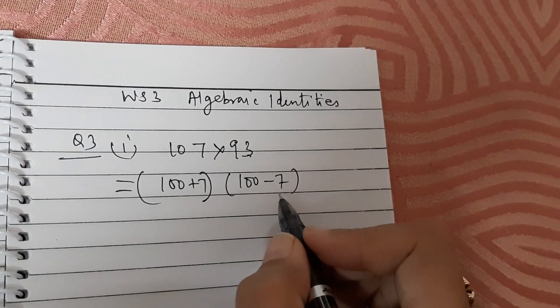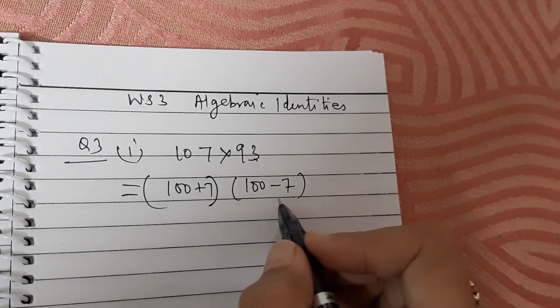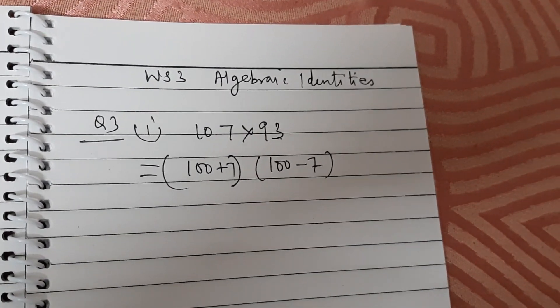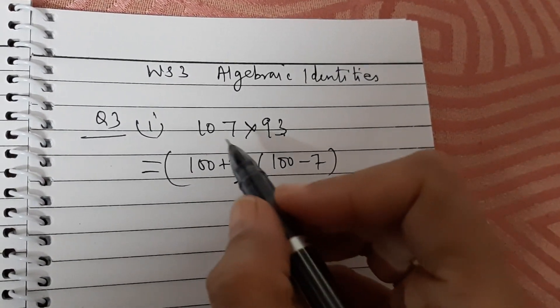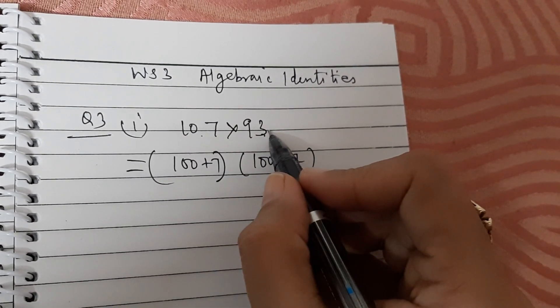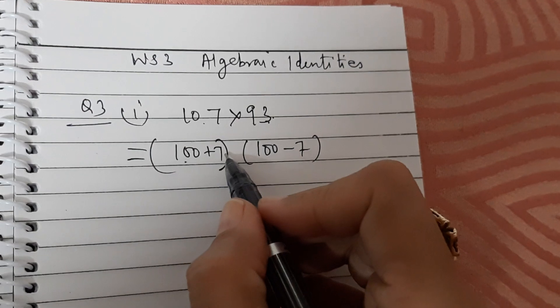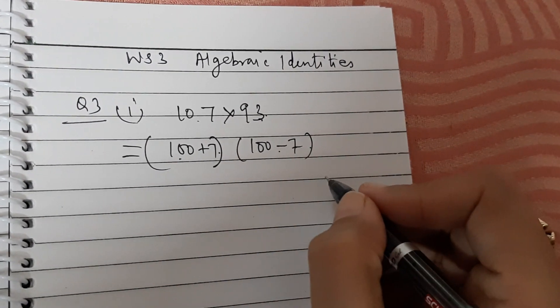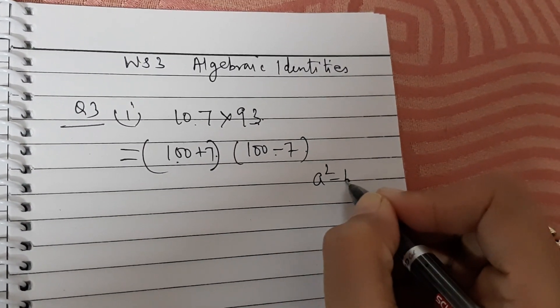We have arranged 107 into 93 as 100 plus 7 into 100 minus 7. So using the identity a² minus b² is equal to a plus b into a minus b, this will be equal to 100² minus 7².